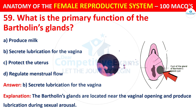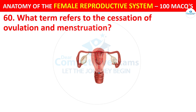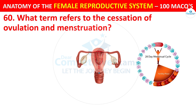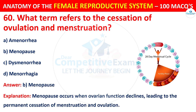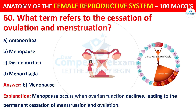Question number 60. What term refers to the cessation of ovulation and menstruation? Options: amenorrhea, menopause, dysmenorrhea, or menorrhagia. The correct answer is B — menopause. Menopause occurs when ovarian function declines, leading to the permanent cessation of menstruation and ovulation.